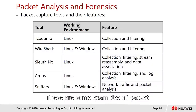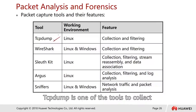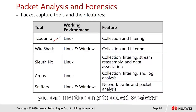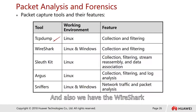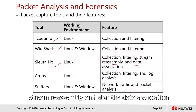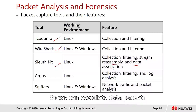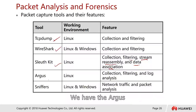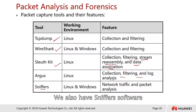For packet analysis and forensics: in a Linux environment, TCP dump is one of the tools to collect network packets and perform filtering — you can specify to collect only packets you are interested in. Wireshark is quite similar to TCP dump. We also have the SloKit for collection, filtering, stream reassembly, and data association — reassembling all the streams of a packet. And Argus for collection, filtering, and log analysis, as well as sniffer software to sniff network packets and perform packet analysis.